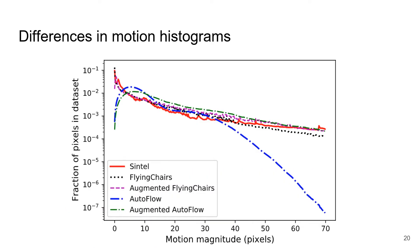Another interesting observation we have is that surprisingly, the motion histogram of the learned dataset doesn't match that of Sintel. In fact, even after augmentation, AutoFlow undersamples low-range motion. Our intuition for this phenomenon is that when looking to optimize performance, small motion does not contribute much to the final error.